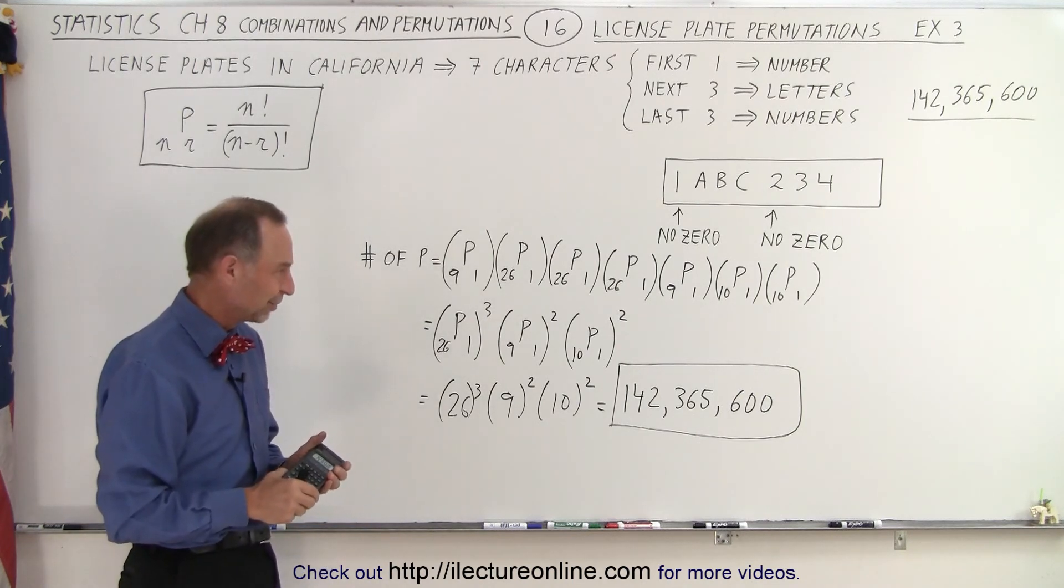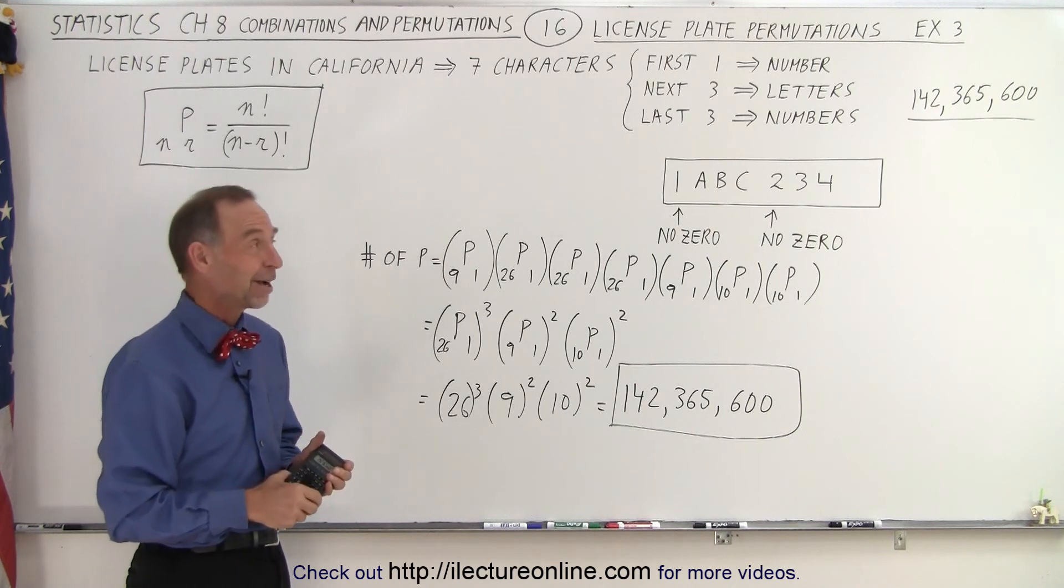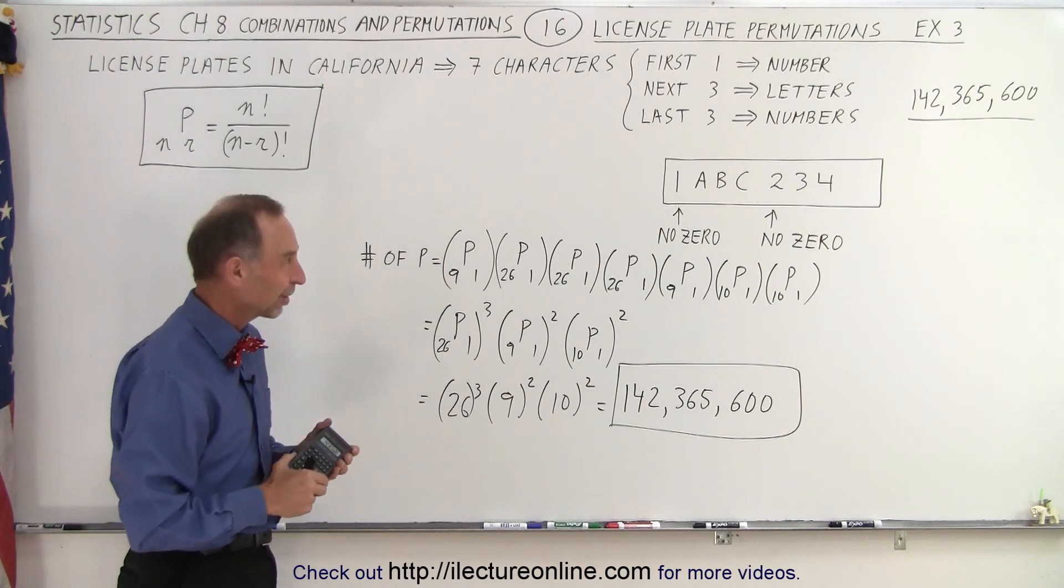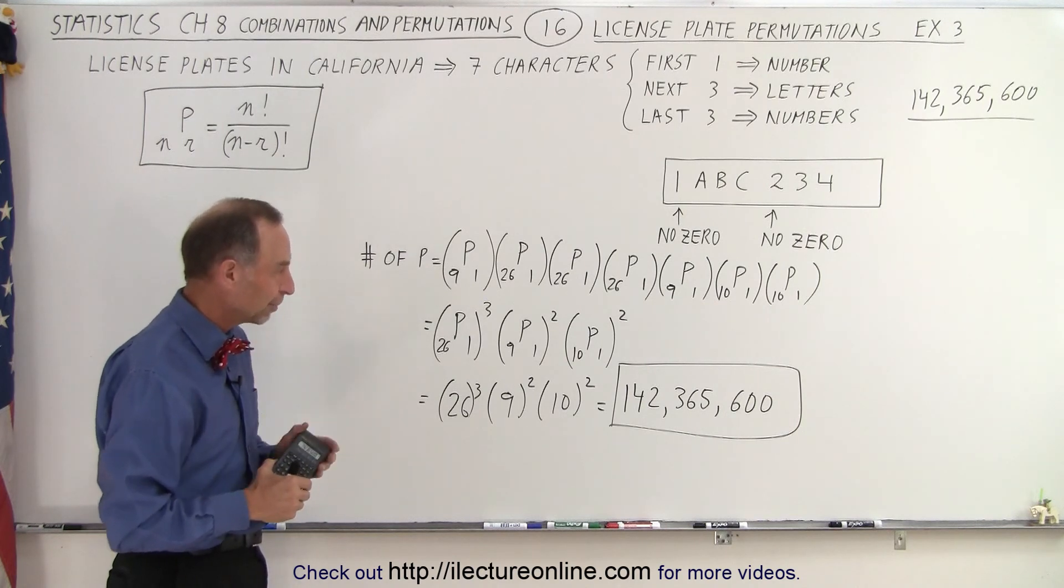Wow. That seems like a lot of numbers, but it wasn't enough. So let's see how many more we get by changing the scheme and making that first character a letter as well, as well as a number. And that is how it's done.